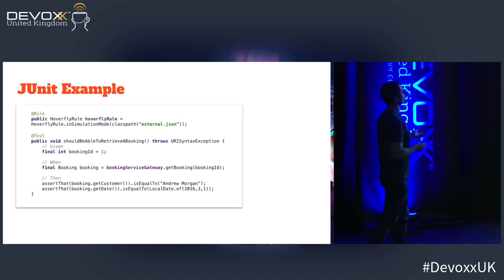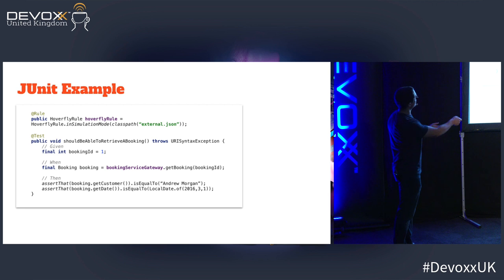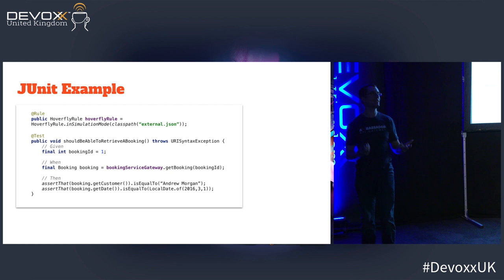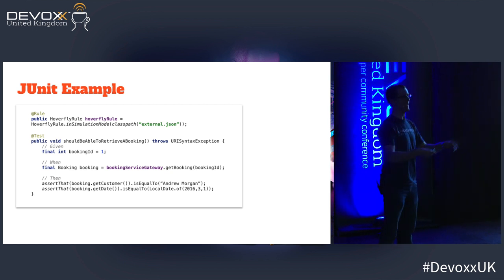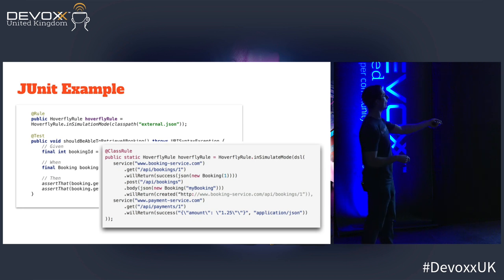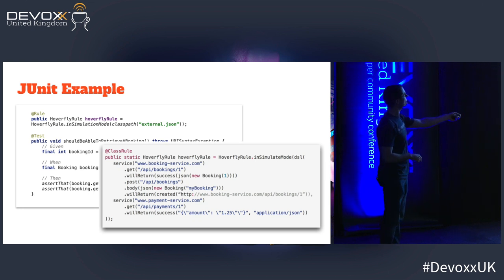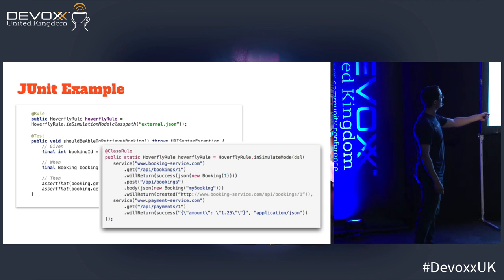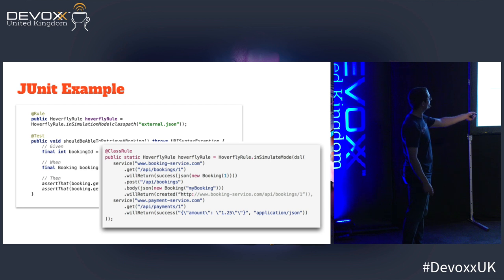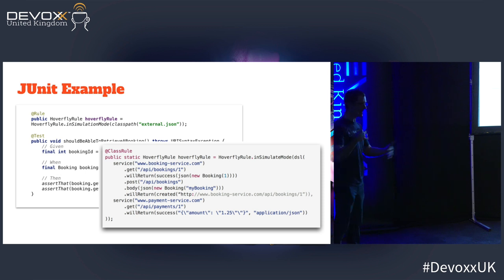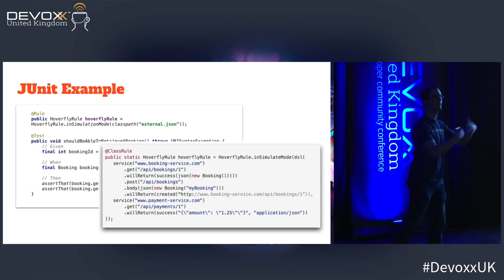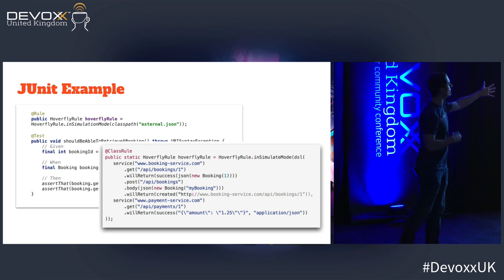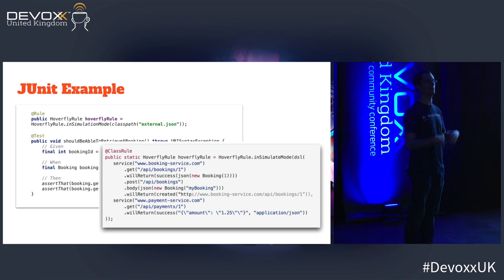JUnit example: you can literally load in the data — you can see I've got an external JSON file at the top. You can spin up Hoverfly in-process in your JUnit test, run your tests, and then shut it down. You can also do WireMock-style testing. You can literally almost test-drive an API — before it's even created, you can say 'given I make a call with these params, I'll get this data back.' A quite nice way to work in tandem with the producer.